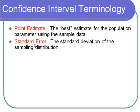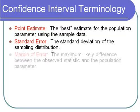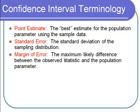Next, the standard error. That came up in the central limit theorem and we're going to be using it when talking about confidence intervals. The standard error is the standard deviation of the sampling distribution — it tells you how far off you're likely to be from the population parameter when using the sample parameter. The margin of error is the maximum likely difference between the observed statistic and the population parameter, and it's related to the standard error with a multiplier based on the confidence level.